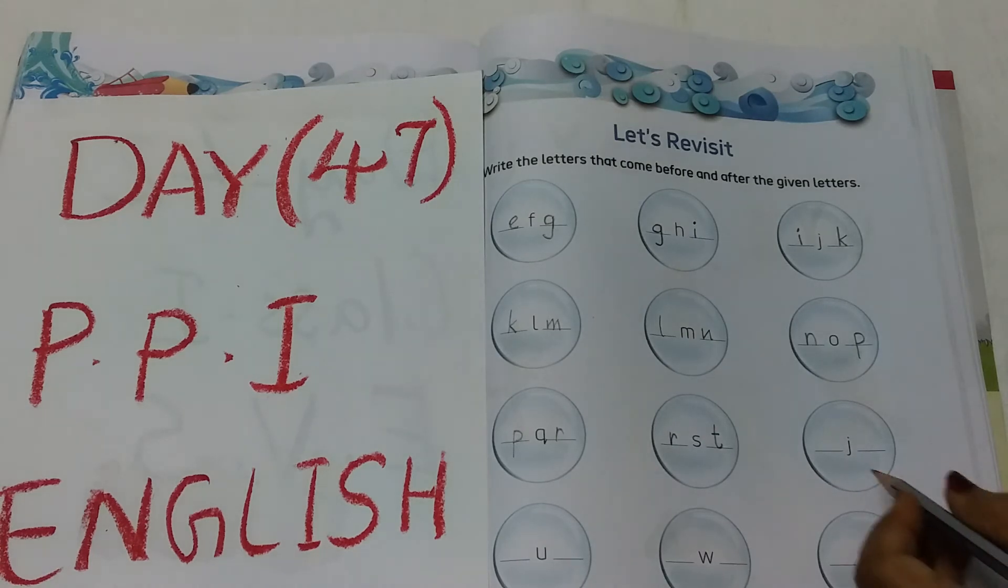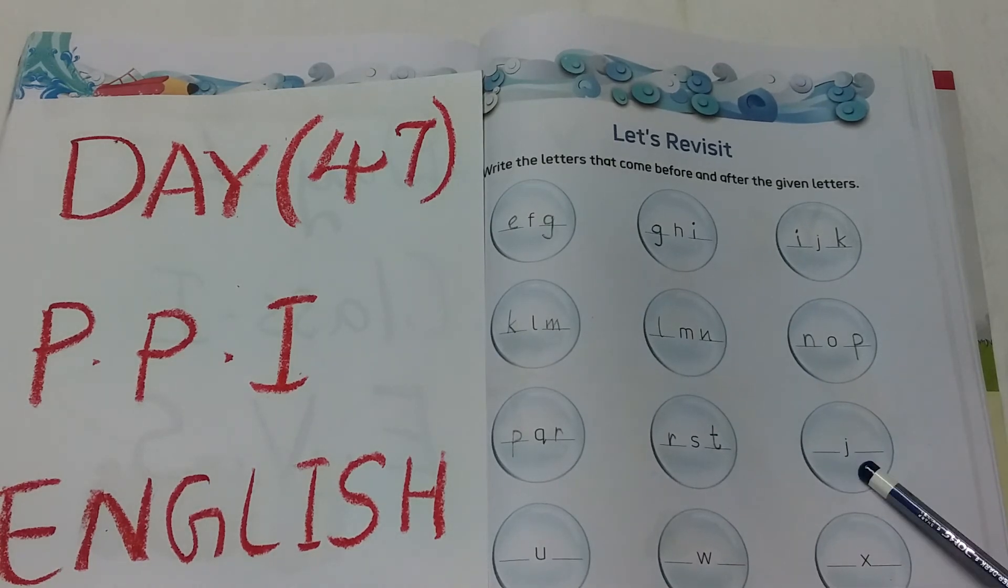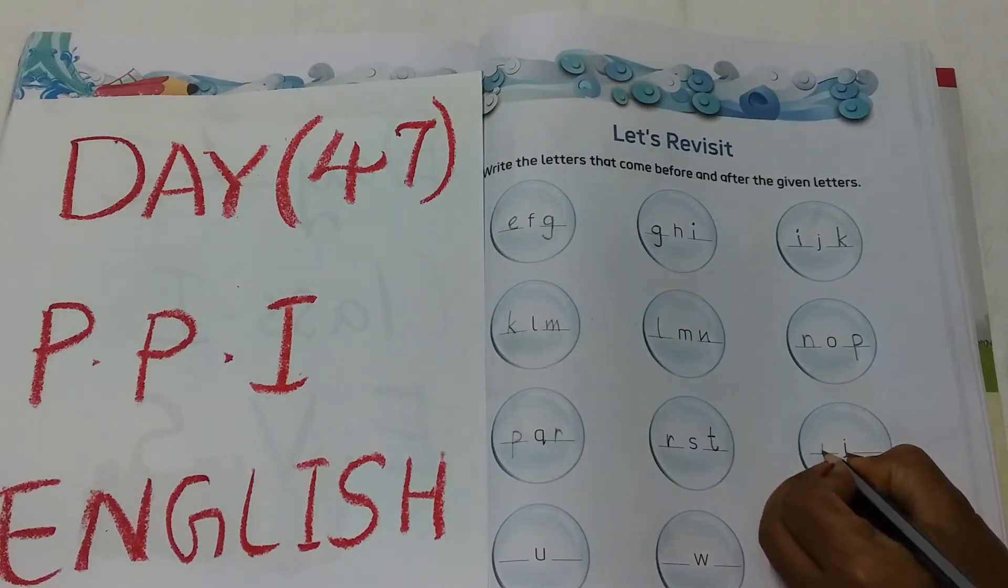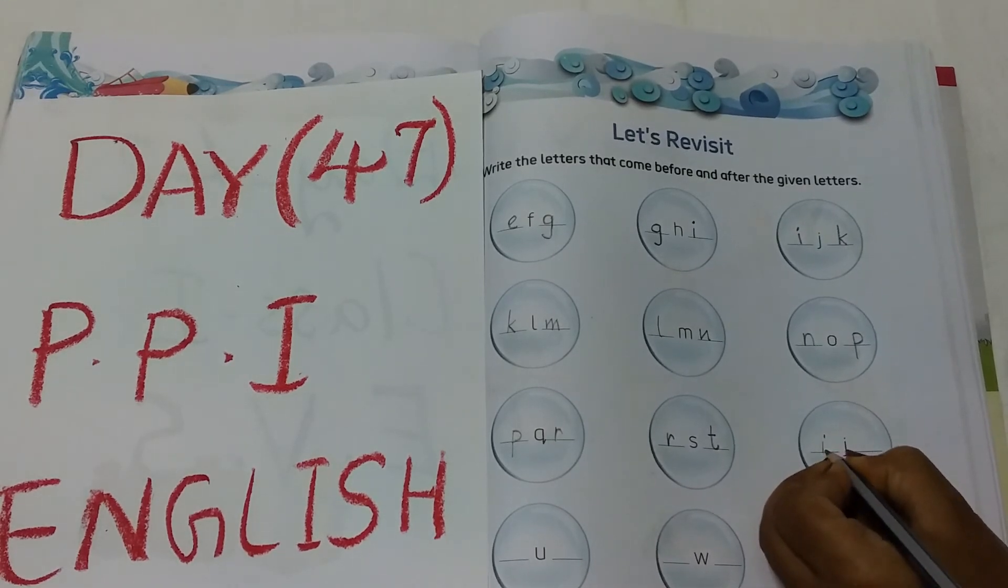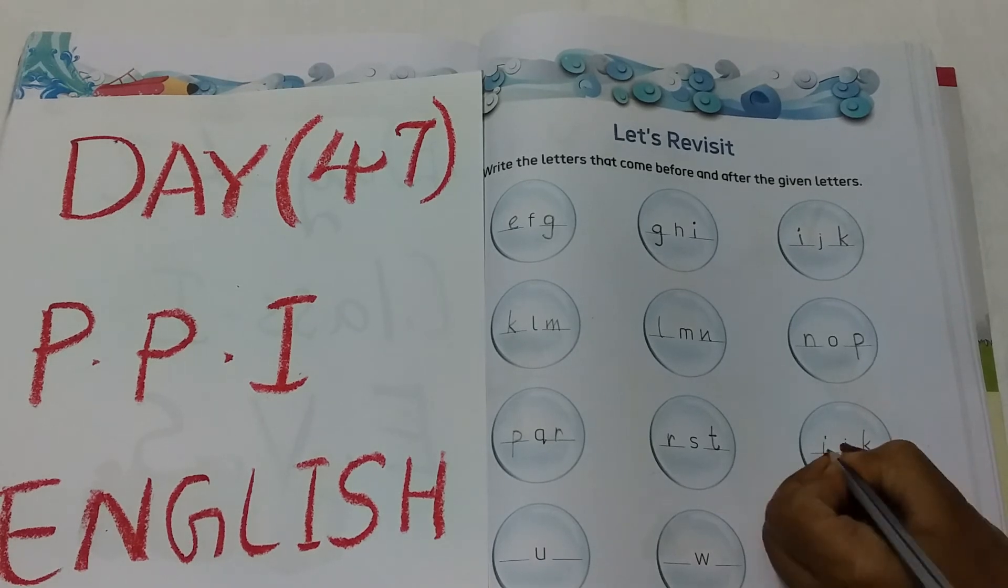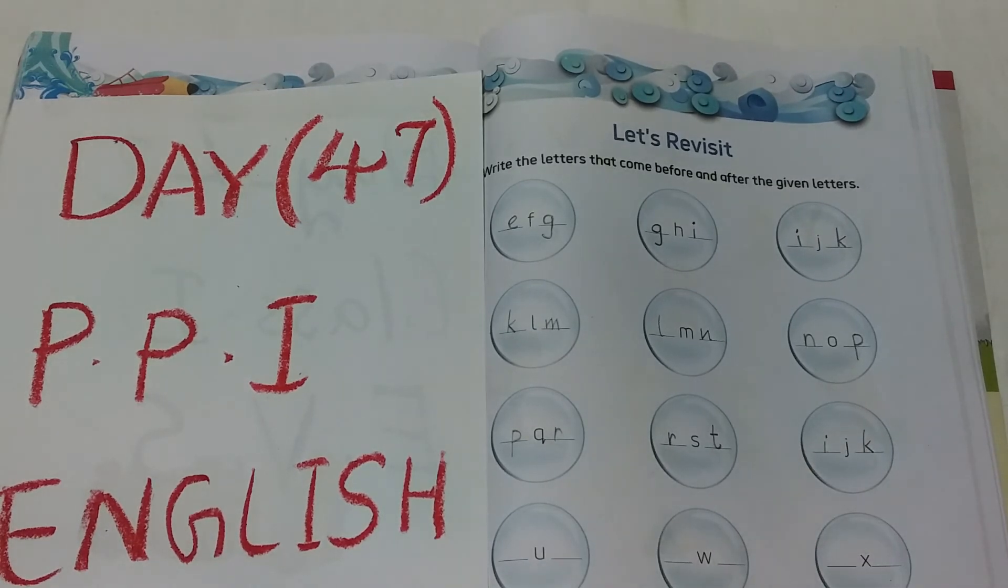Now see the next circle. Letter J. J before I. I, J, K.